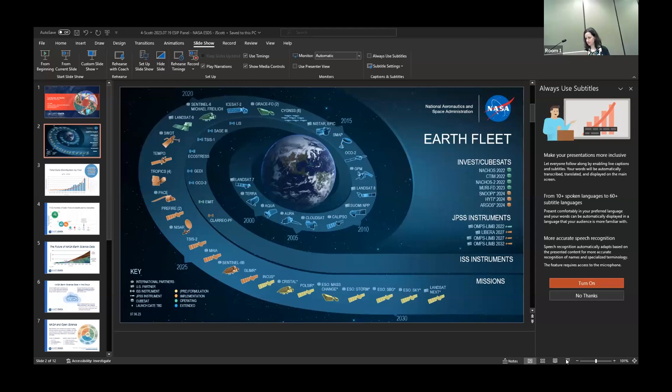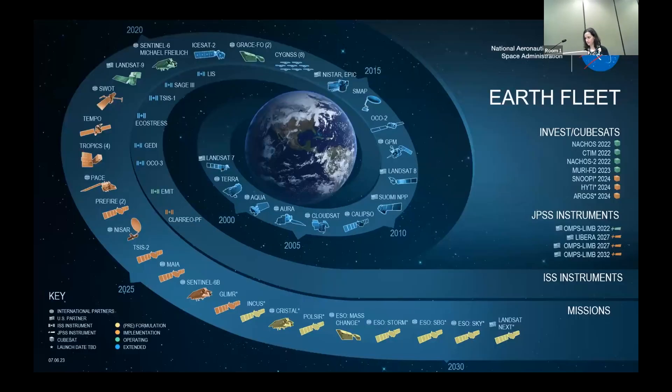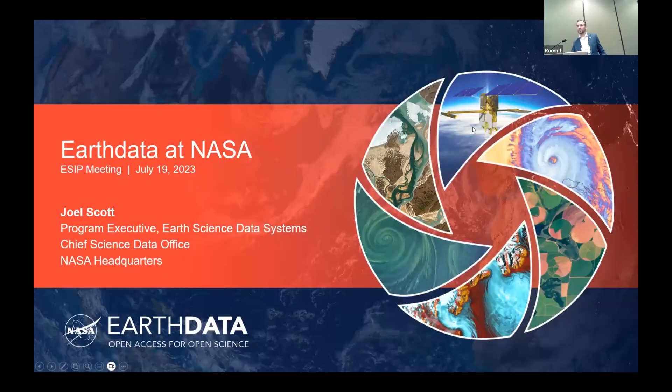Next we have Joel Scott from NASA — he's Program Executive for Earth Science Data Systems, Chief Science Data Office. Hi, I'm Joel Scott, program executive for Earth Science Data Systems. Thank you Leslie and Megan for having me — this is my first ESIP in person and I'm so glad to be here. I work with Sarita — the lead program executive for Earth Science Data Systems — and we both report to Kevin Murphy, Chief Science Data Officer at NASA Headquarters, and his deputy Katie Baines.